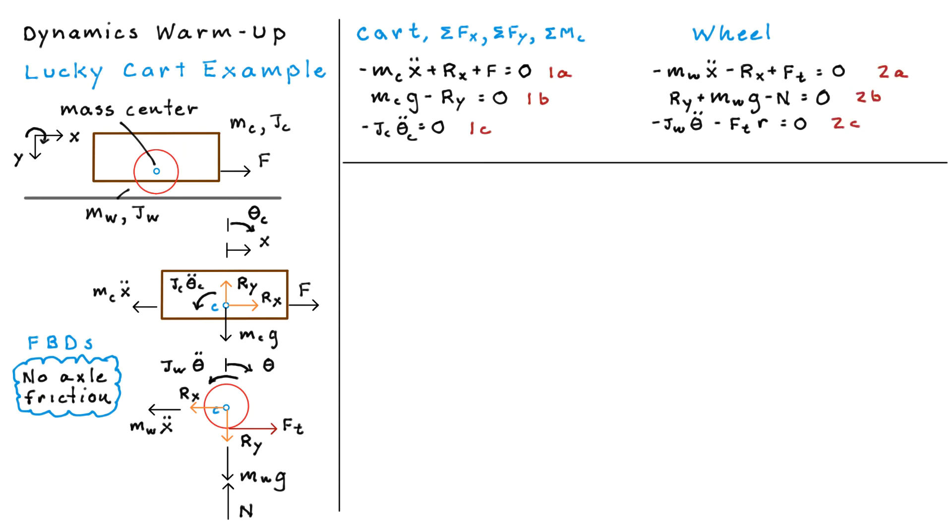We'll label these with some numbers. And now let's introduce some additional assumptions, and that will lead us into some kinematic relationships. So one of the main assumptions that we're going to use here is that the wheel is actually massless, or at least it's negligible compared to that of the cart, which means that MW and JW are both equal to zero.